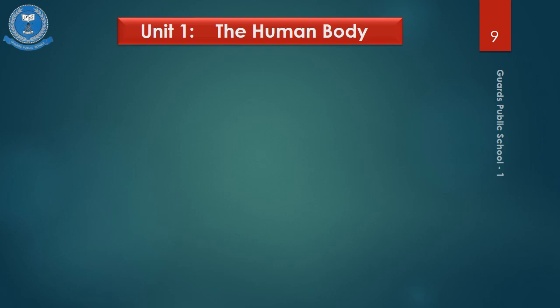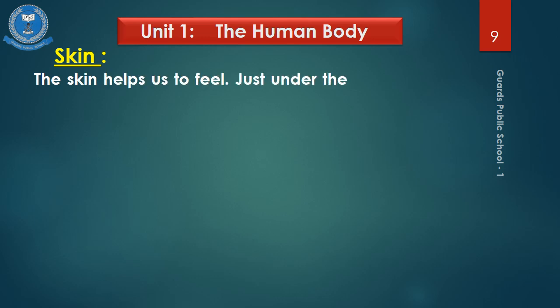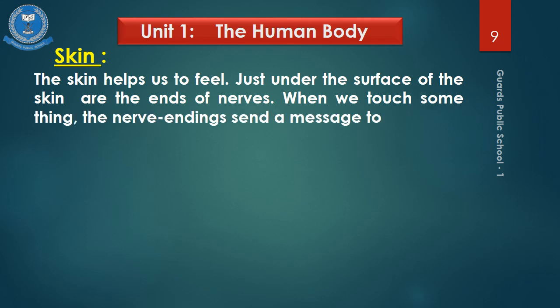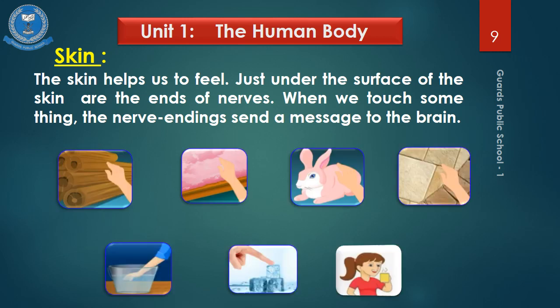Now the last sense organ is skin. The skin helps us to feel. Just under the surface of the skin are the ends of nerves. When we touch something, the nerve endings send a message to the brain. We can feel things by touching them. Look at the pictures showing the knowledge we gain through our skin.